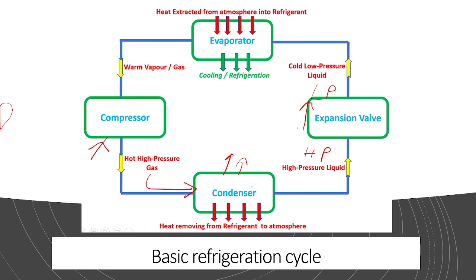The refrigerant is almost at a position which tends to evaporate. This liquid will enter the evaporator where it starts evaporating, absorbing heat from the surrounding, and the refrigerant takes that heat along with it and converts to a gas. From the compressor, hot gas comes; after the condenser, it is high pressure liquid; after the expansion valve, it is low pressure liquid; and in the evaporator, this liquid will become a superheated gas.